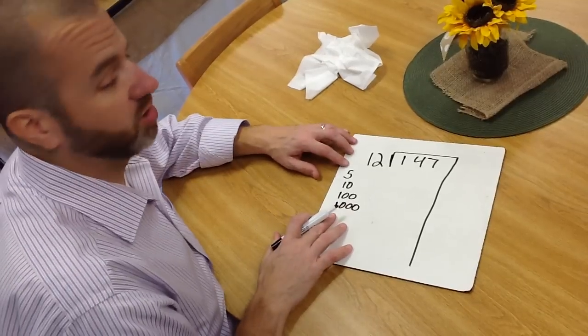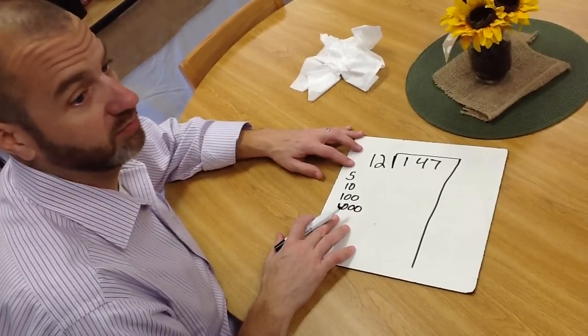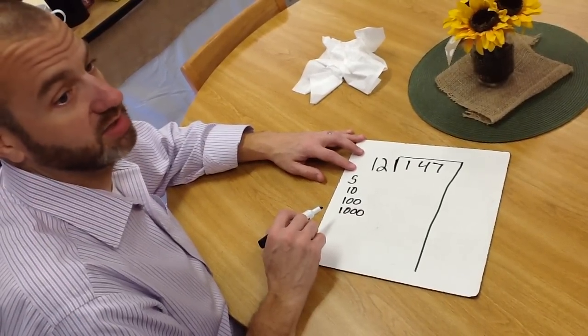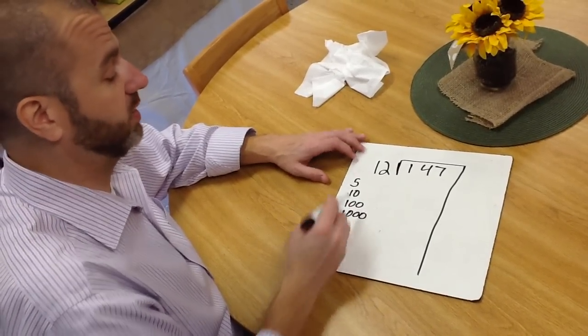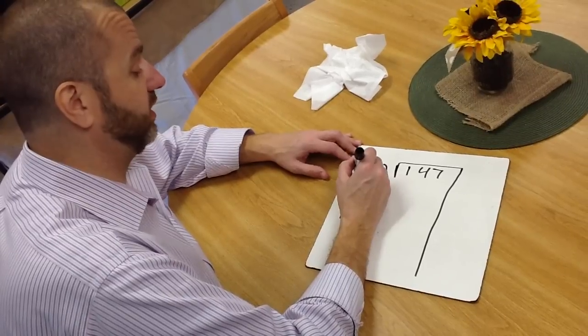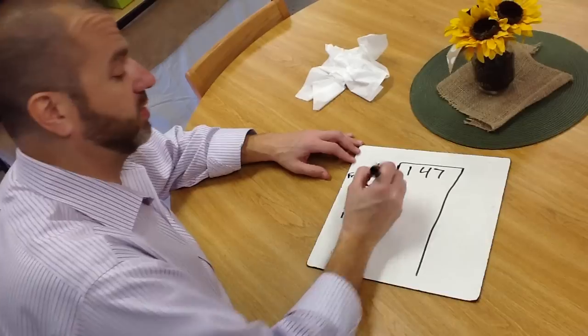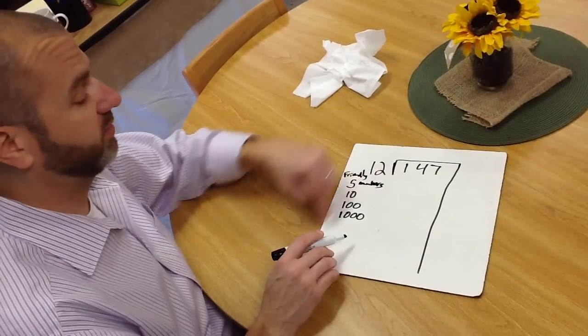...because these are numbers that kids are used to, and they, believe it or not, even at the youngest level, can count by 100's because it's such an easy thing to count by. So these are what we call our friendly numbers, and my handwriting is terrible. I apologize for that, but you get the idea.